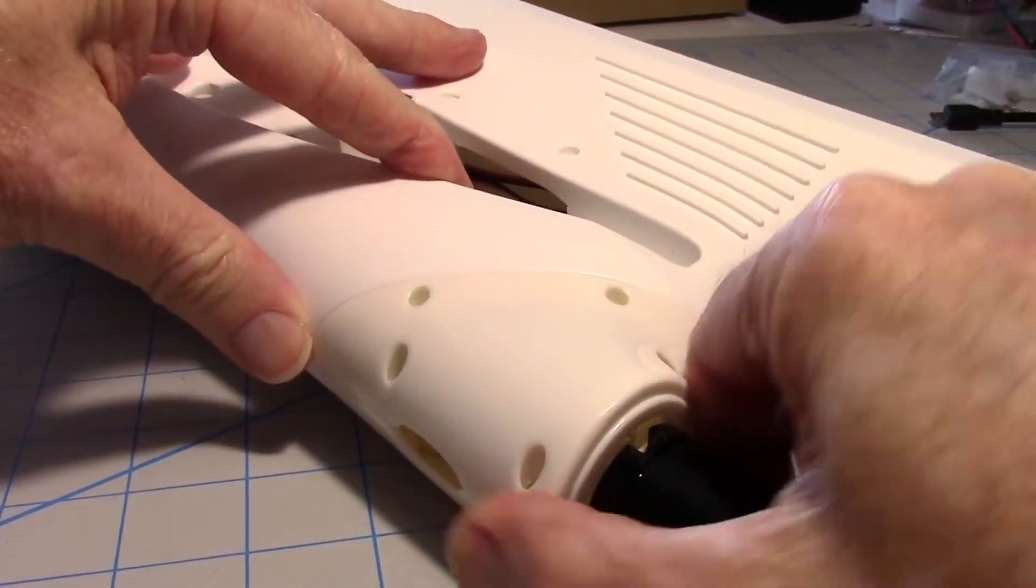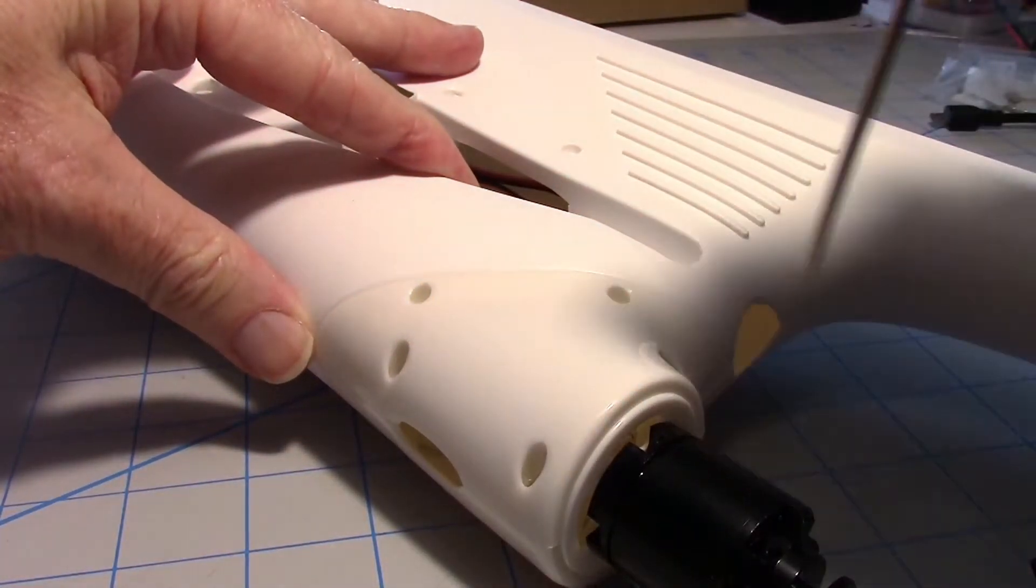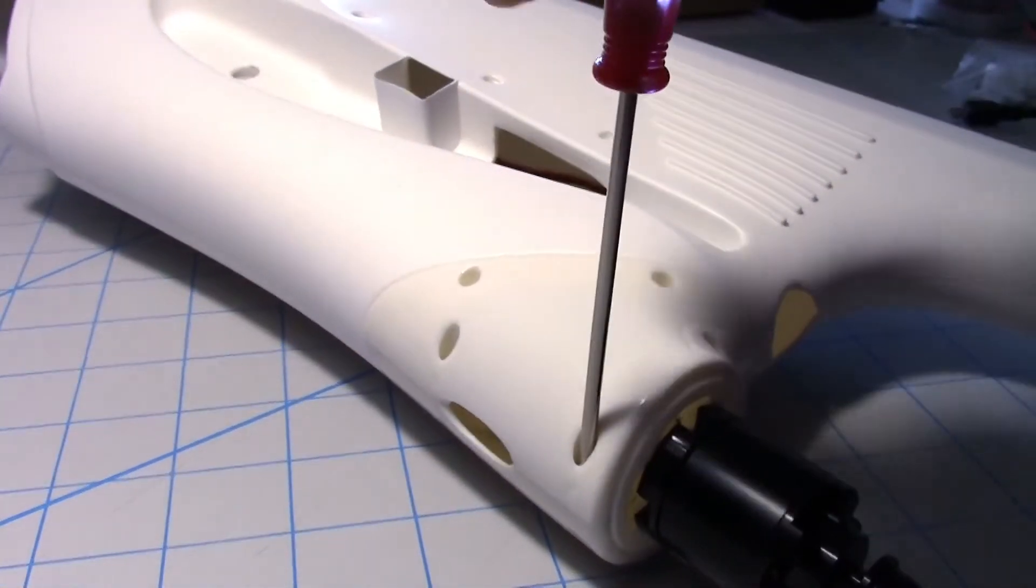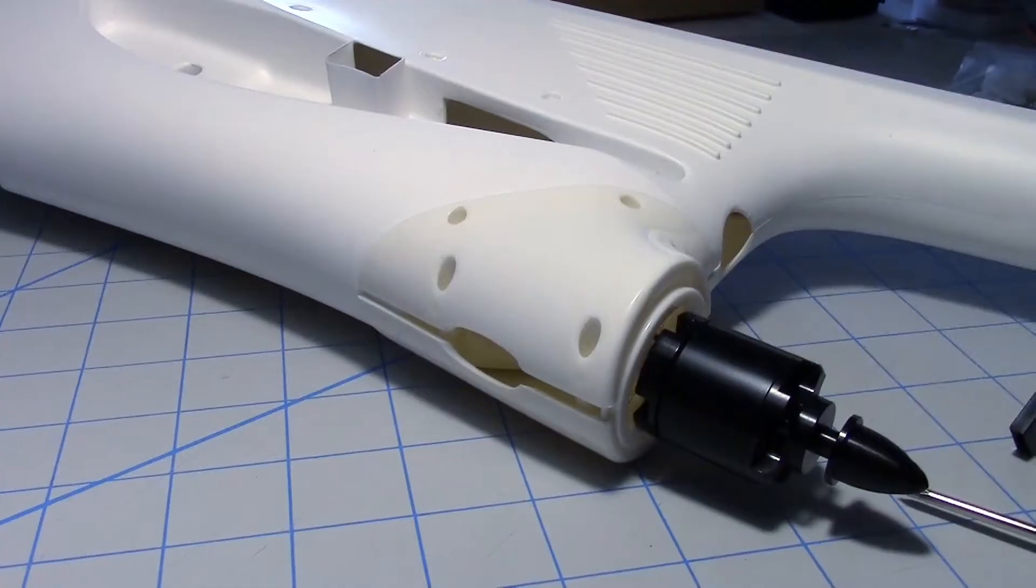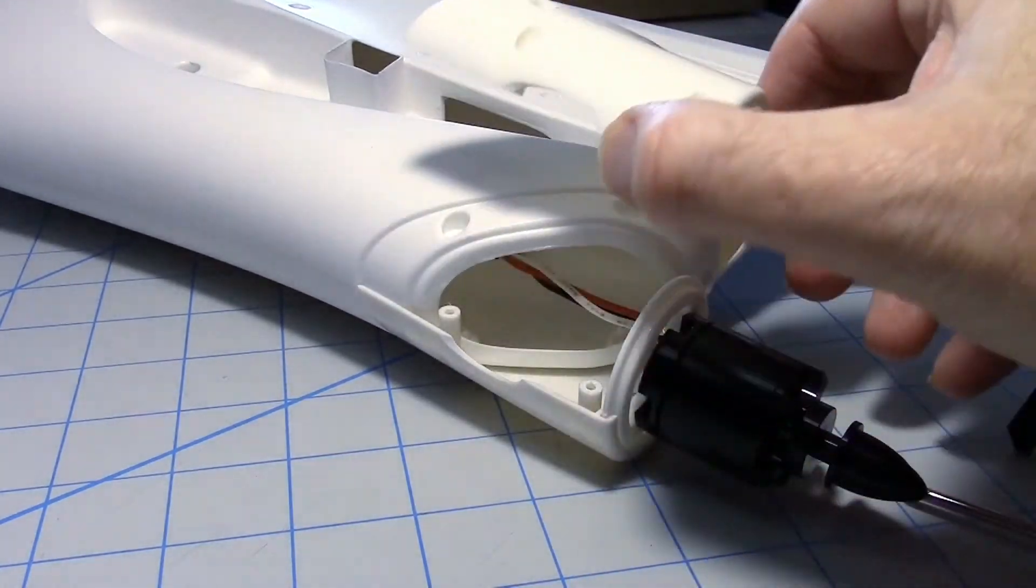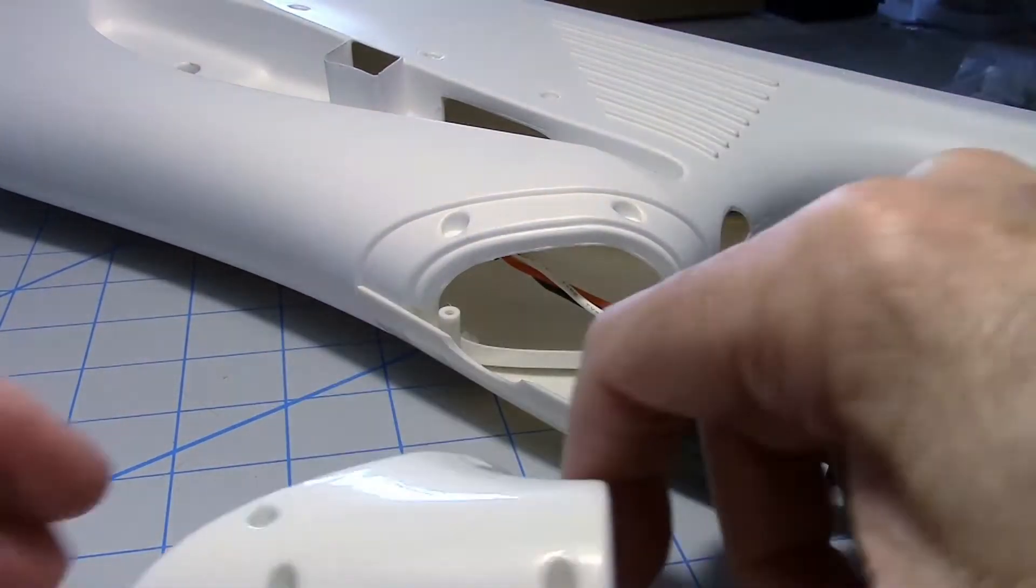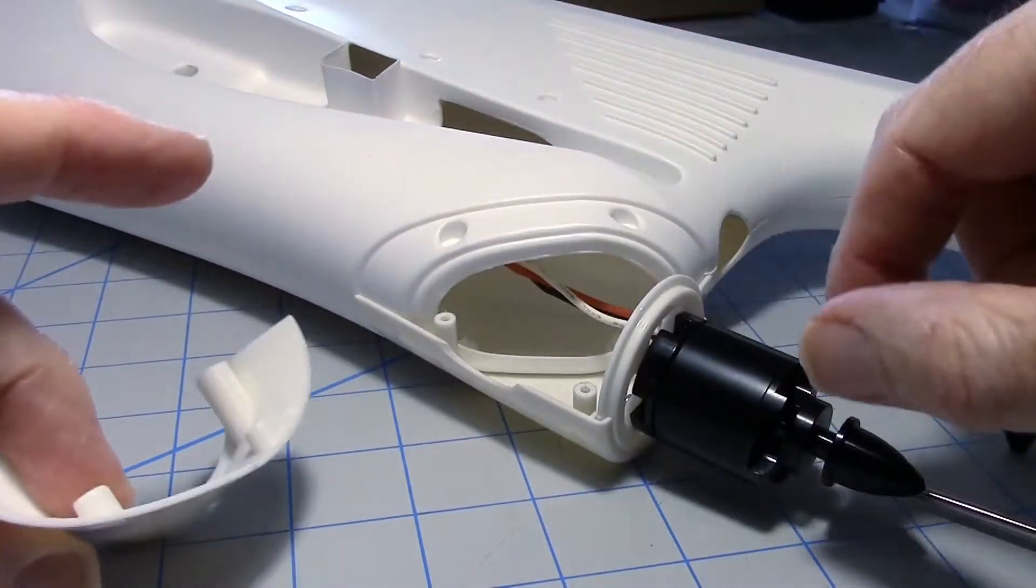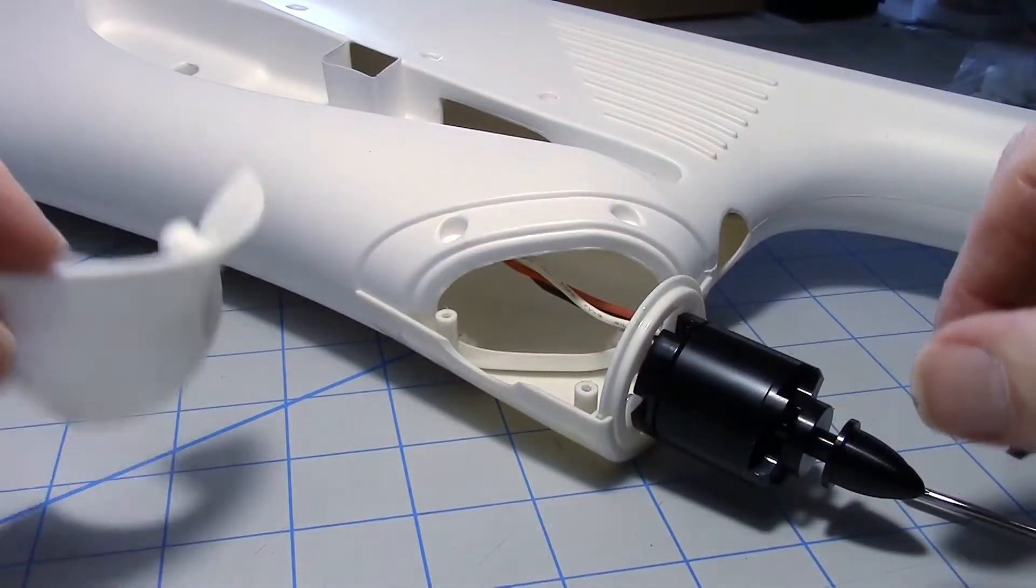Well, it doesn't come off after removing these four screws, so I'm going to take these three out next. Okay, removing those screws loosened it right up so it comes off. I guess it was because these pegs were in those holes and it wouldn't come off without removing these three screws.